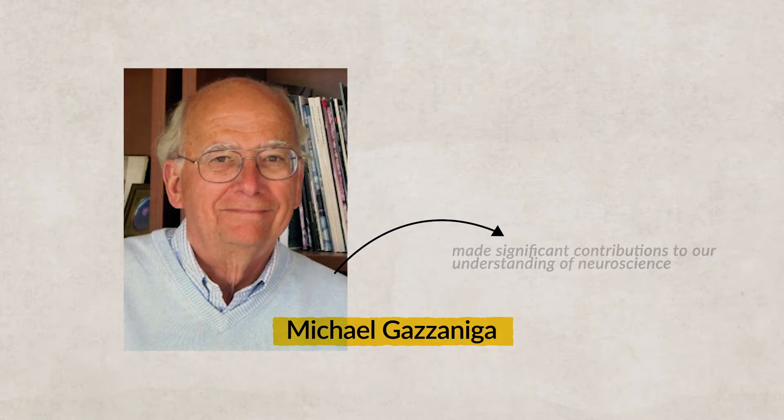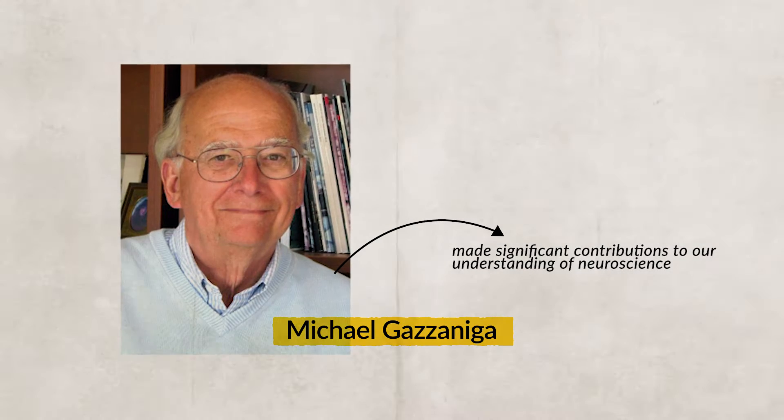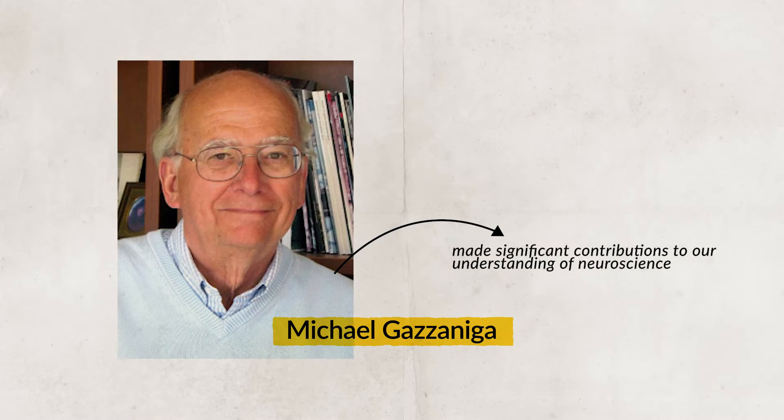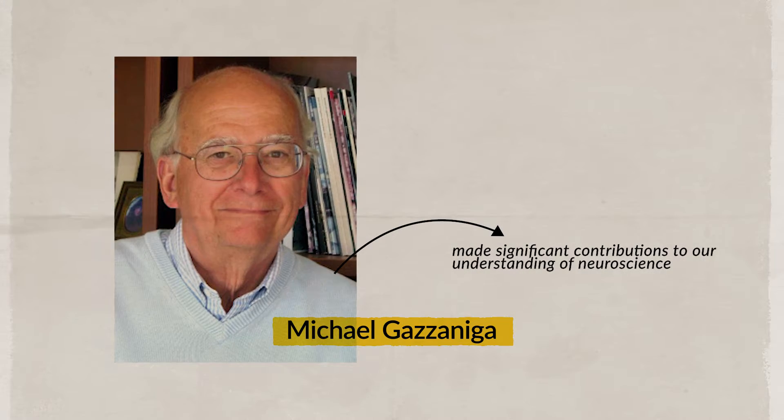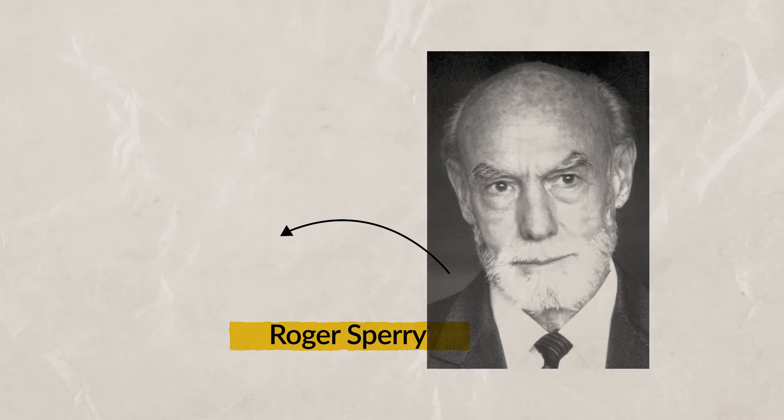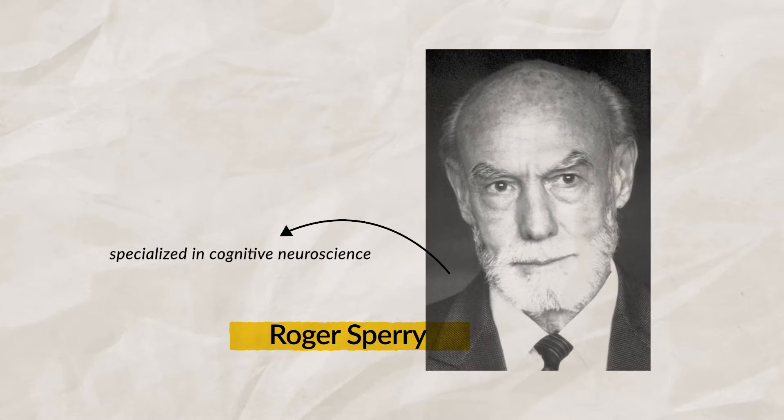People like Michael Gazzaniga have made significant contributions to our understanding of neuroscience. Gazzaniga was a student of Roger Sperry and he specializes in cognitive neuroscience. He's done research with individuals with split brain and has made significant advances in our understanding of brain lateralization, a concept that we talked about in our last video.